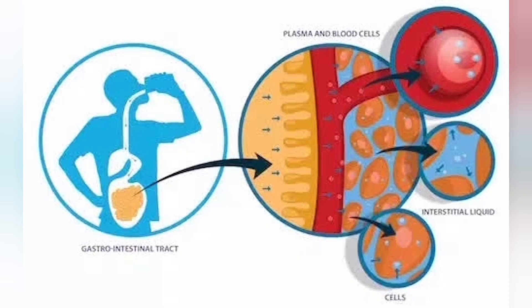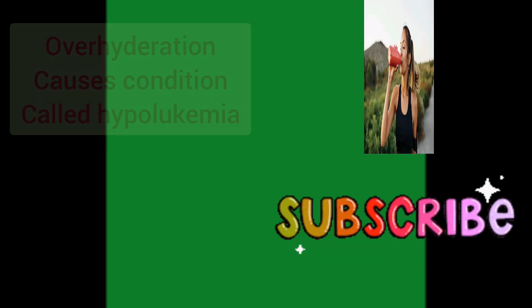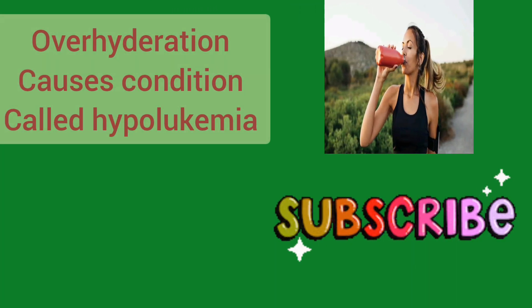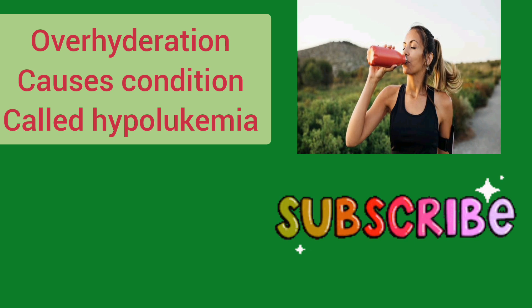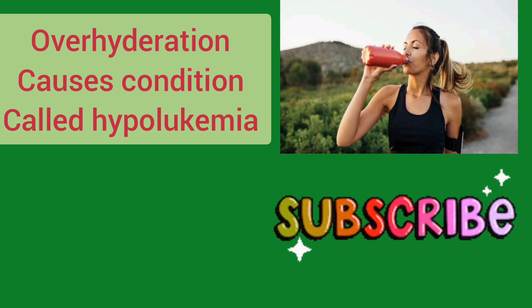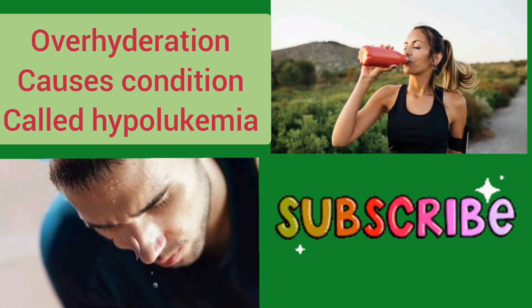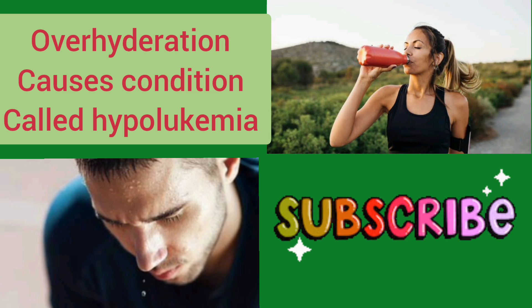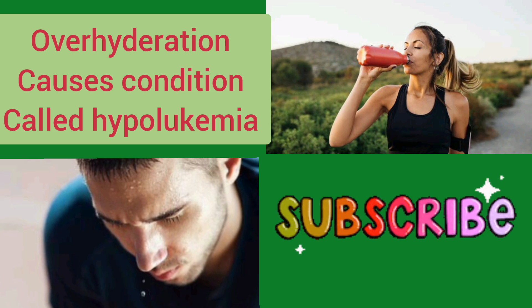Your cells also absorb the water present in your body. If your fluid levels are not right, your cells may absorb too much, which can decrease concentrations of solutes and cause the cells to swell. Overhydration can also cause a condition called hyponatremia, which refers to when sodium levels in your body are lower than normal and can lead to serious health complications.